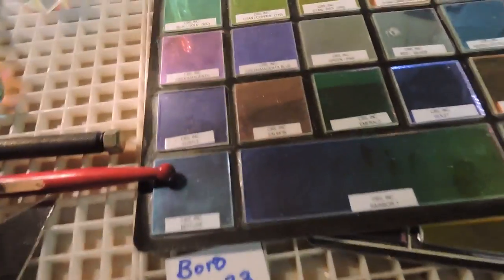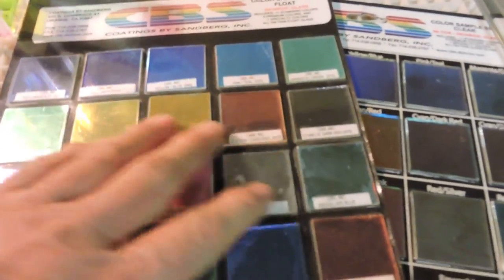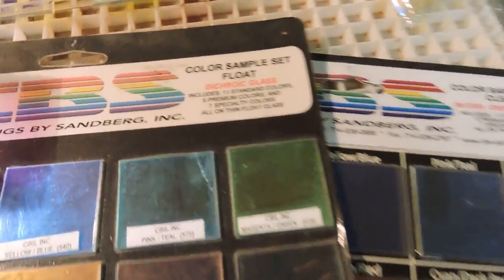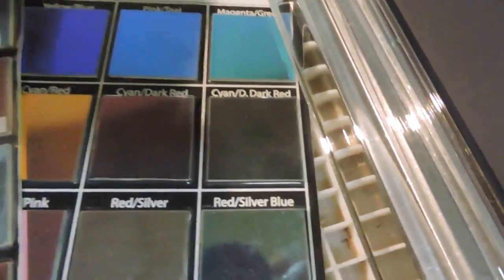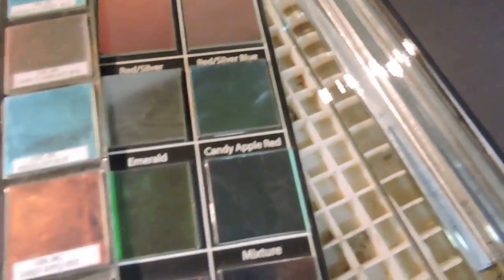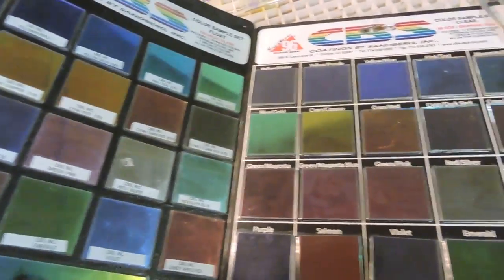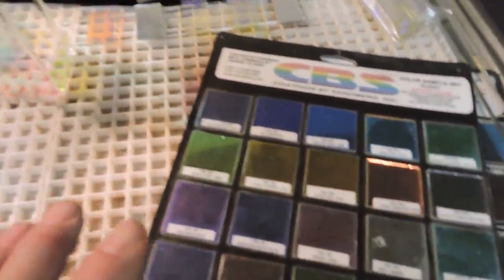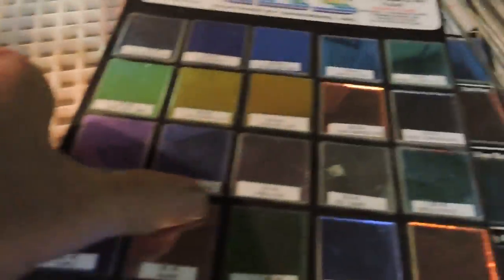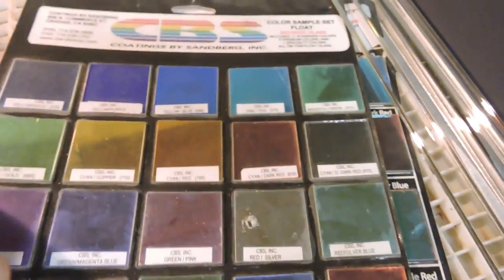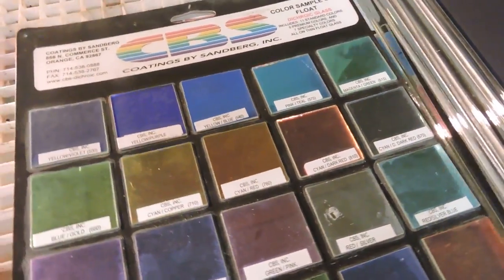Boro is a big deal. It comes in many colors. These are just a few. This is a float sample set, but the same, and here you see it in 96 sample set, they're identical. Wait a minute, how can they be identical? They're different glass. That's the thing, folks. Dichroic is a coating. So here we see it on Boro, here we see it on float, and here we see it on 96 that you would fuse. All the same exact coating.